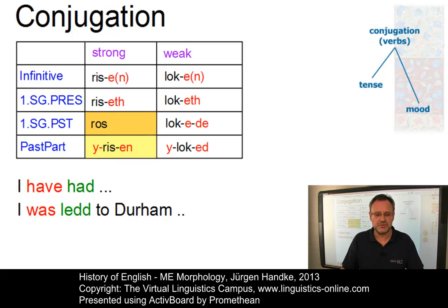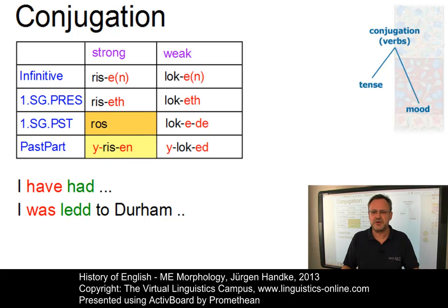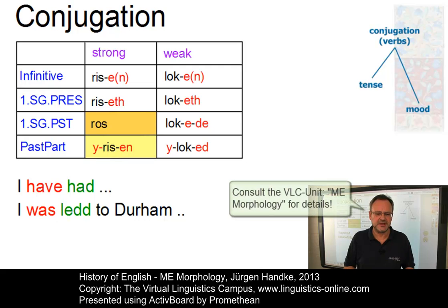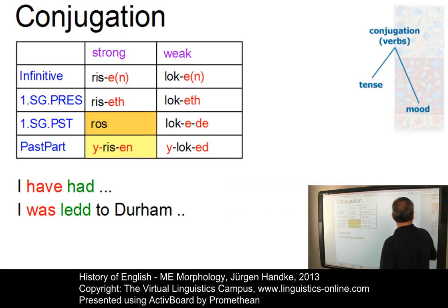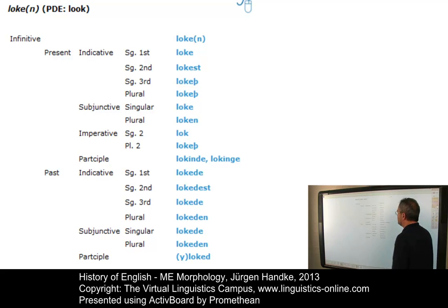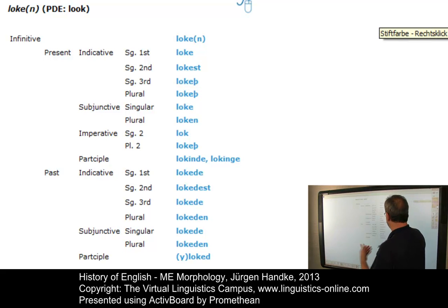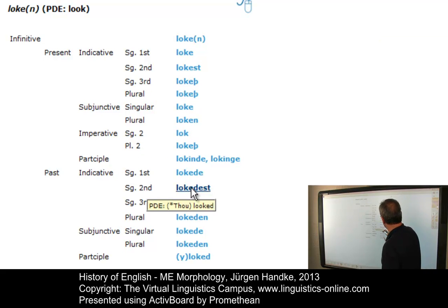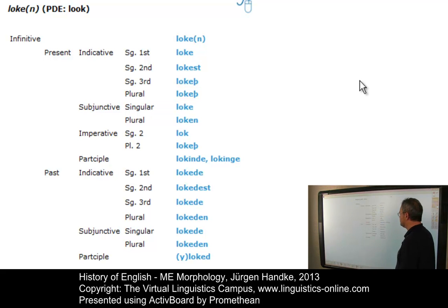It doesn't make sense to show all forms of several selected verbs in an e-lecture of this kind. In the Virtual Linguistics Campus unit on Middle English Morphology, you have access to several interactive examples like these. Here you see the verb loken — present-day English look — and by means of simple mouse rollover you can see the translation and access further information using this and many more examples.